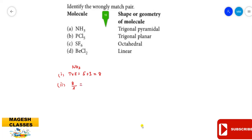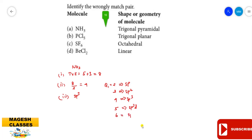Here it is 8 divided by 2, which equals 4. This quotient of 4 indicates the molecule is sp³ hybridized. The rules are: quotient 2 = sp, 3 = sp², 4 = sp³, 5 = sp³d, and 6 = sp³d².